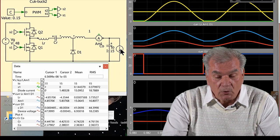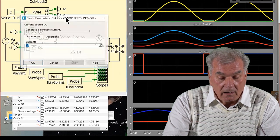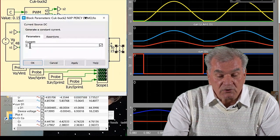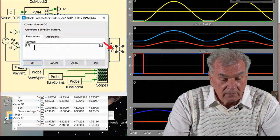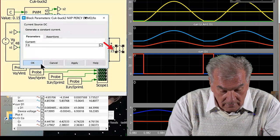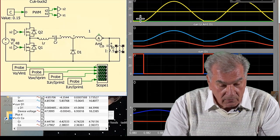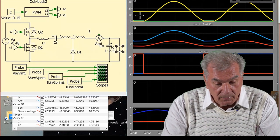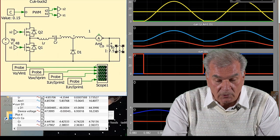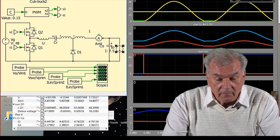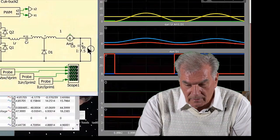Now I want to show the fundamental feature of this converter. There is now 15 amps on the output, and I will now change this 15 amps to 7.5 amps—half of the DC load current.